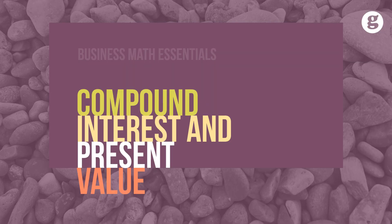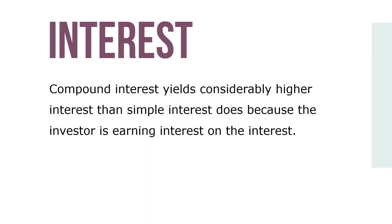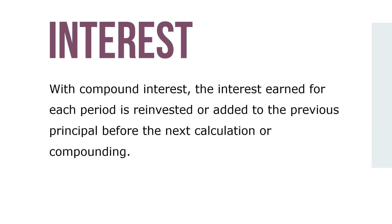Let's take a look at the time value of money. In business, another common way of calculating interest is by using a method known as compounding, or compound interest, in which interest calculation is applied a number of times during a term of a loan or investment. Compound interest yields considerably higher interest than simple interest because the investor is earning interest on interest. With compound interest, the interest earned for each period is reinvested or added to the previous principal before the next calculation or compounding occurs.